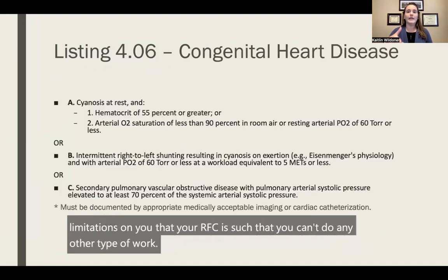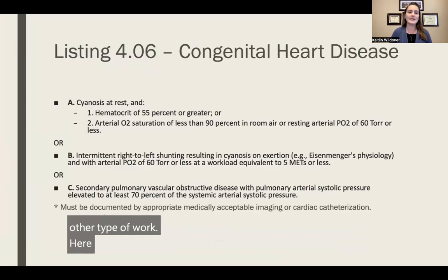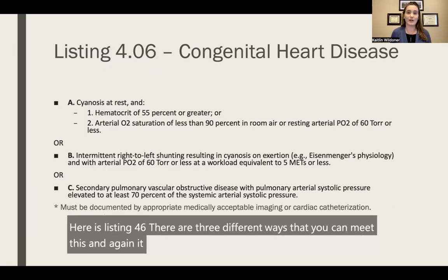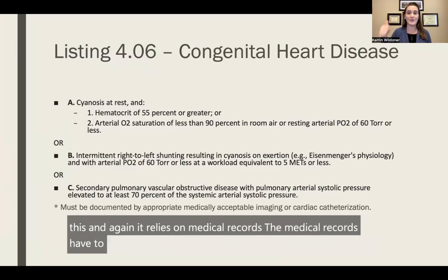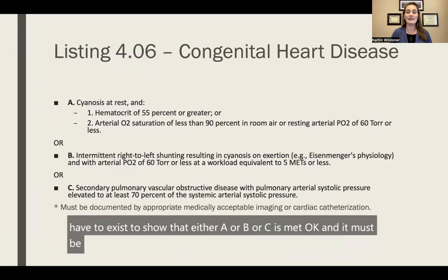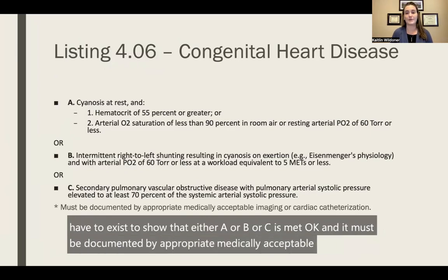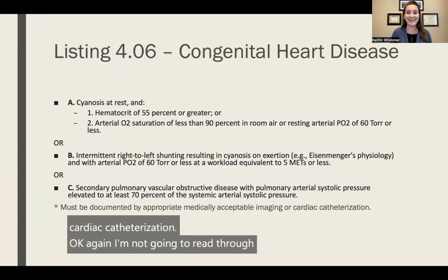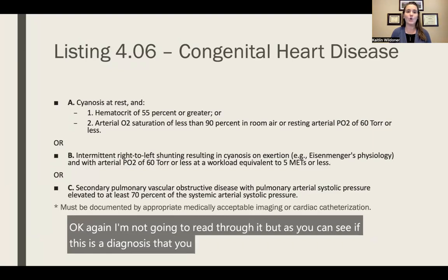Here is listing 4.06. There are three different ways that you can meet this, and it relies on medical records — the medical records have to exist to show that either A, B, or C is met. It must be documented by appropriate medically acceptable imaging or cardiac catheterization. As you can see, if this is a diagnosis that you have, you can see how stringent the requirements are.